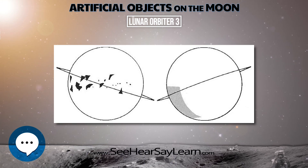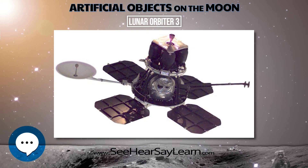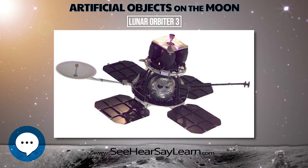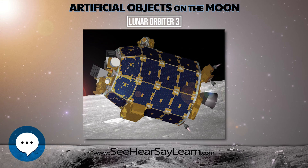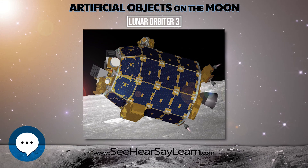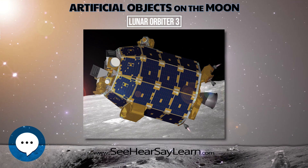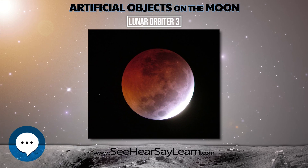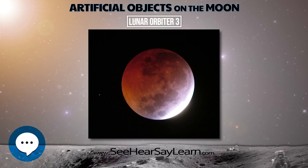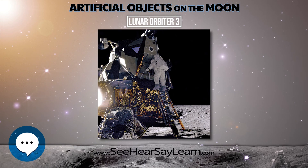After four days of tracking, the orbit was changed to 55 by 1,847 kilometers. The spacecraft acquired photographic data from February 15 to February 23, 1967, and readout occurred through March 2, 1967.